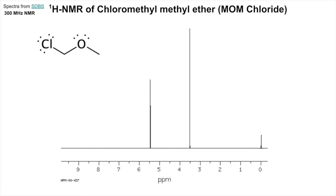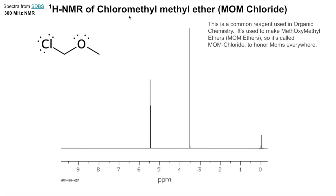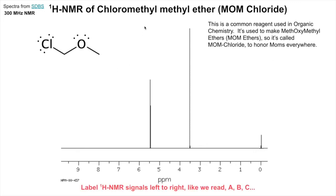Here's the molecule: it's chloromethyl methyl ether. An ether is a functional group - an oxygen with a carbon on either side of it. This one is a common reagent used in organic chemistry; it's used to make methyl oxymethyl ethers, called protecting groups. These protect one part of a molecule so you can react another part. When on a molecule to protect it, that molecule is called a MOM ether - methoxymethyl ether - so we call this reagent MOM chloride.